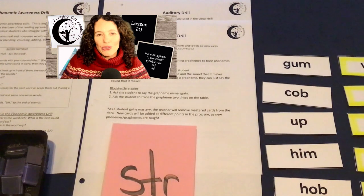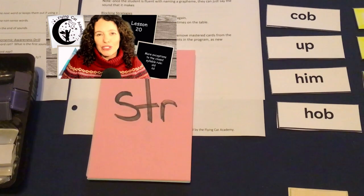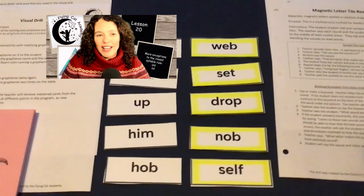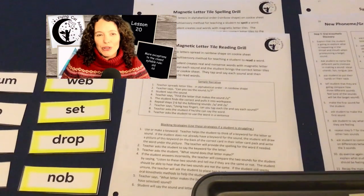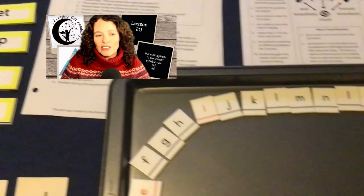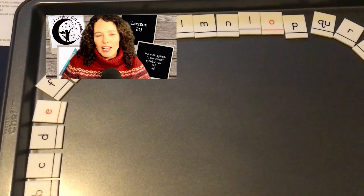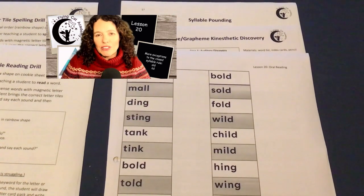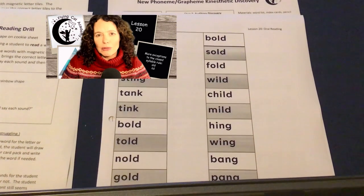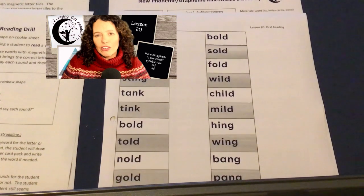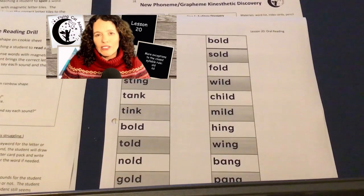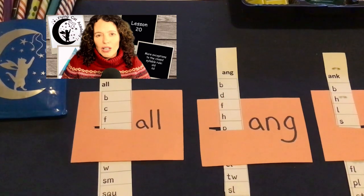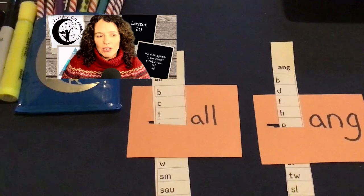The visual drill and auditory drill will require the teacher instruction sheet and the card pack the student is currently working on. Then we have the syllable card drill — you'll have to cut that one out in advance. Then we've got the magnetic letter tile drill for spelling and reading. For that one, you'll need the cookie sheet with the magnetic letter tiles all spread out in rainbow shape and the teacher instruction sheets. You'll have the syllable pounding sheet and the new phoneme-grapheme discovery instructions, which you won't use today because we're introducing some other new content. You'll have the other sheets attached to the lesson plan, including the single word list, the story, and the sentences. In addition, we're going to have some sliders because we've introduced quite a few closed exceptions already and a great way to review these is by using sliders.